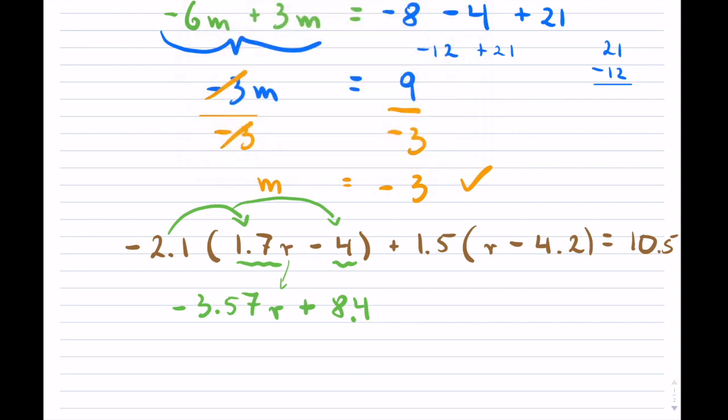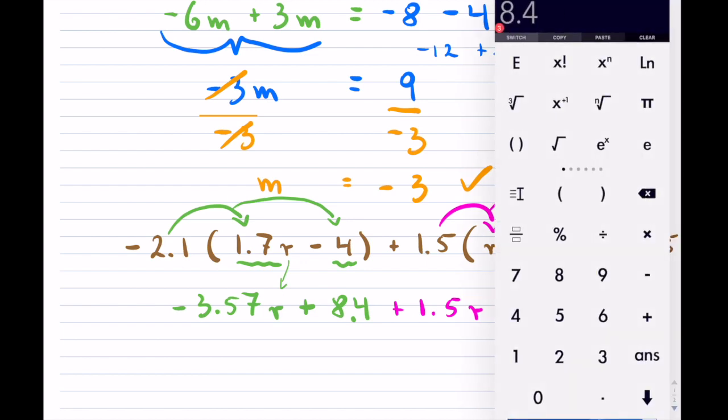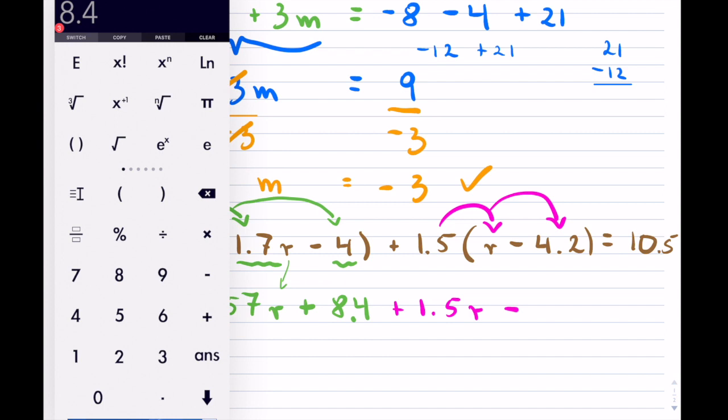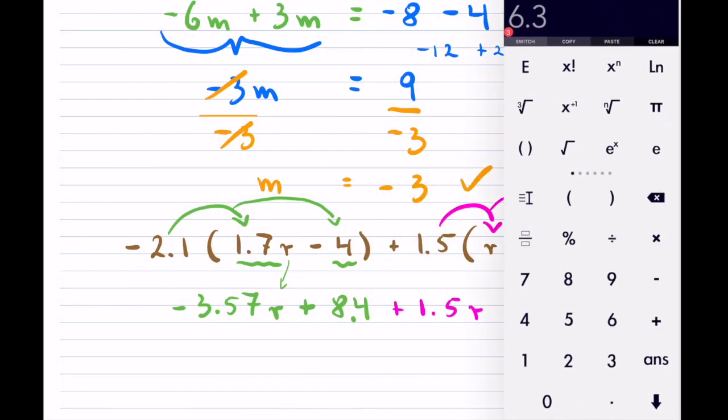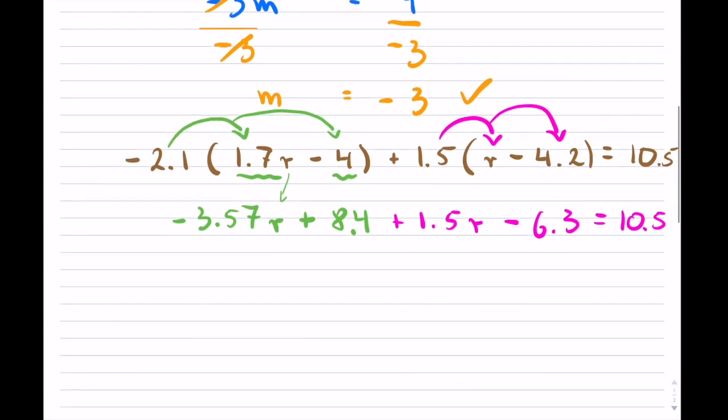and now my second bracket, if we do that. So here, we're going to do 1.5 times r. So if we shift that over, it's going to be 1.5r, and then it's going to be 1.5 times 4.2. Notice it's negative. So again, I can take my calculator, so I'll have 1.5 times 4.2, so that's 6.3, and then there's nothing to do on the right-hand side. There's no brackets or anything, so we can do that.